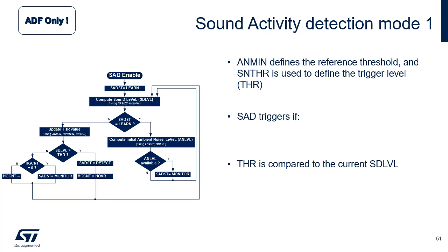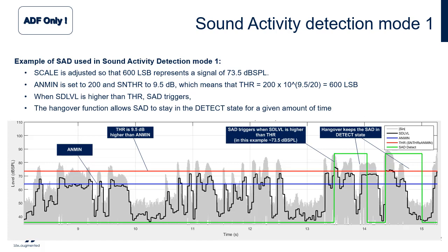In Sound Activity Detection Mode 1, SAD triggers when an absolute value of the sound level is reached. In this mode, the AN-MIN field defines the reference threshold and SNTHR is used to define the trigger level or THR. The formula shows the trigger condition. In this mode, the ambient noise level is not used, but SAD still goes to the learn phase when enabled. Here's an example of SAD used in Sound Activity Detection Mode 1. In black, we can see the successive sound level values computed by SAD. The threshold level THR is computed from the value of AN-MIN multiplied by the gain factor selected with SNTHR. When the sound level is higher than THR, SAD triggers. The green signal shows the SAD detection — when the signal is high, SAD is triggering. The hangover function allows SAD to stay in the detect state for a given number of frames.